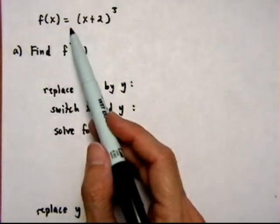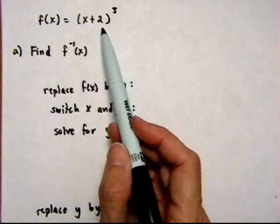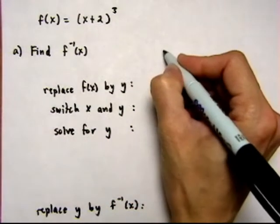Find the inverse of f(x) is equal to x plus 2 quantity cubed. Let's start with f(x).